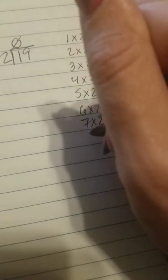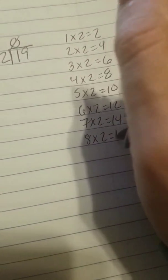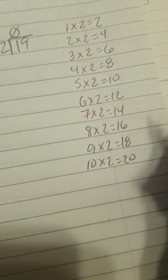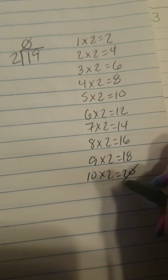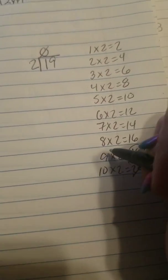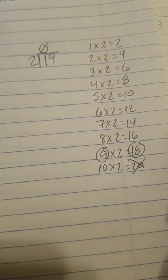So then we have six groups of two, which is 12. Seven groups of two, which is 14. Eight groups of two, which is 16. Nine groups of two, which is 18. And ten groups of two, which is 20. Now I went over. I don't need the 20. So I'm going to go back one group to 18. It took me nine groups of two to make 18. So I'm going to put a nine above the nine and the 18 below the 19.